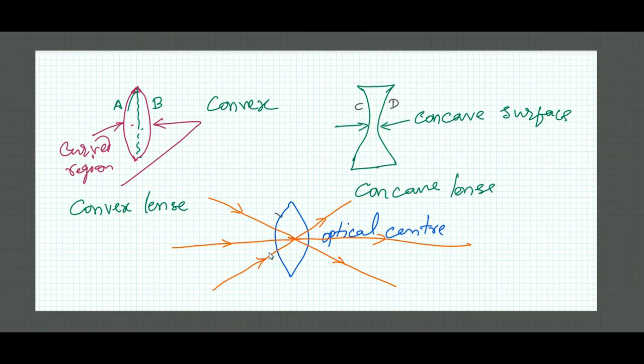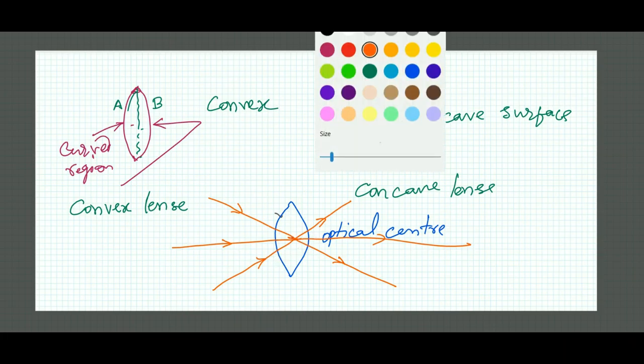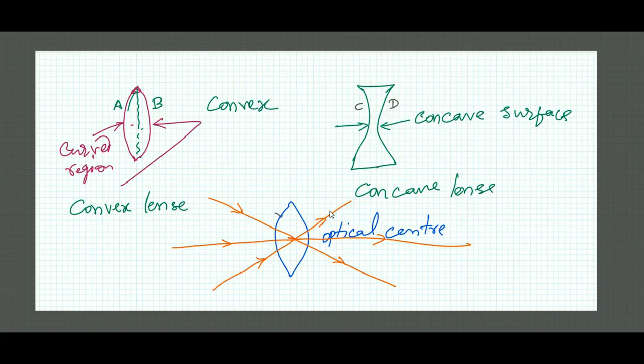The next thing is that every lens has a focal length. That means if parallel light falls from one side on this lens, all the parallel light will converge on a point and that point is called focus of the lens.